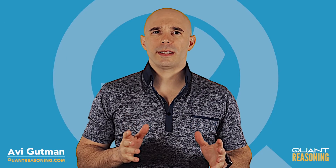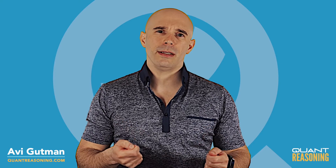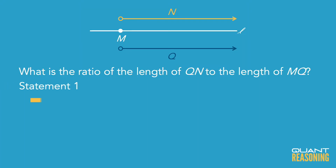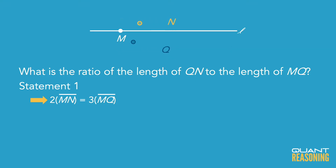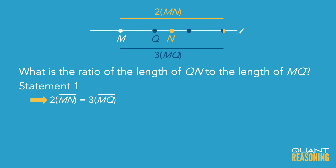Statement 1 tells us that if we double the length of MN, that would be equivalent to tripling the length of MQ. The segment you only need to double would be longer than the segment you'd need to triple for them to be equal to one another. So that means MN is longer than MQ, which means n is farther away from m than q is, which means q is somewhere between m and n. And that's exactly what Statement 2 said.